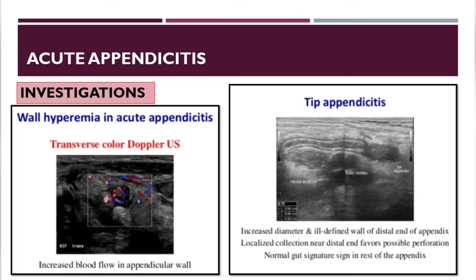In tip appendicitis on ultrasound, there is increased diameter and ill-defined border of the distal end of the appendix; localized collection near the distal end favors possible perforation, with a normal gut signature in the rest of the appendix.